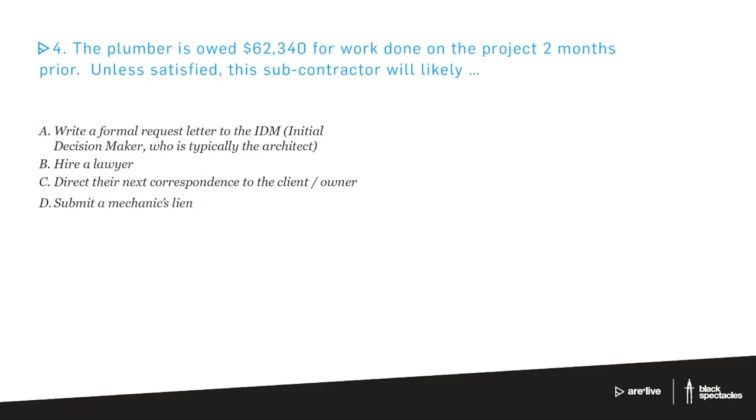Number four, the plumber is owed $62,340 for the work done on the project two months prior. Unless satisfied, this subcontractor will likely, I kind of find, I like, unless satisfied, it's sort of like they're having a duel or something. But unless they somehow are treated fairly, what are they likely to do to fix this situation? So A, write a formal request letter to the IDM, which is the initial decision maker, which is typically the architect. B, hire a lawyer. C, direct their next correspondence to the client slash owner. Or D, submit a mechanics lien.